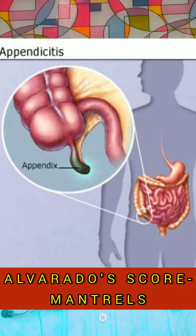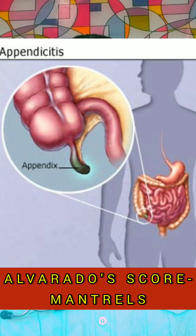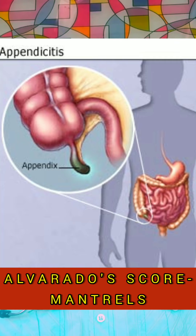Let's study the mnemonic of the Alvarado score. The mnemonic I have made is MANTRELS. M is for migratory pain to the right iliac fossa. A is for anorexia. N is for nausea and vomiting. T is for tenderness in the right iliac fossa. R is for rebound tenderness. E is for elevated enzymes. L is for leukocytosis. And S is for shifting pain, which may be from right to left. These are all the points for the Alvarado score. If it is more than 8 or around 8, appendicitis is confirmed.